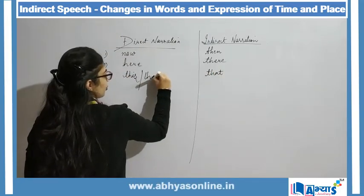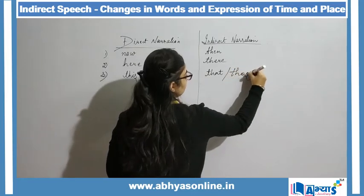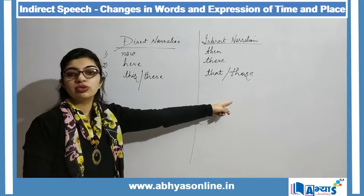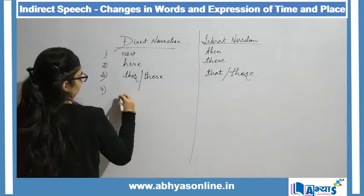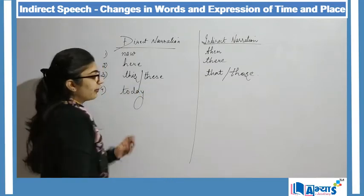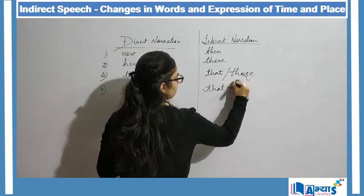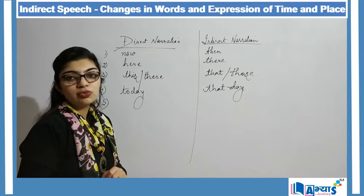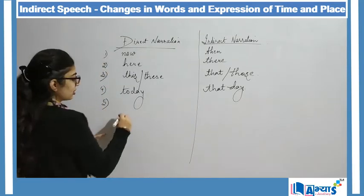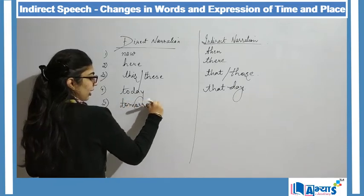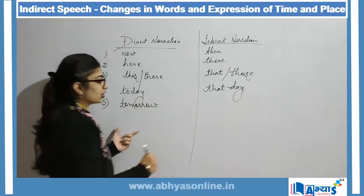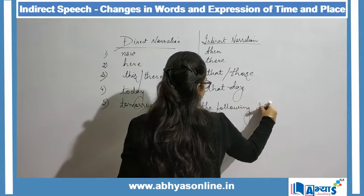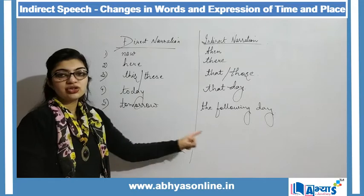Similarly, 'these' changes to 'those'. If I want to convert from direct to indirect sentence, 'these' will change to 'those'. Then if I say 'today', my 'today' changes to 'that day'. And if in my direct sentence I say 'I will go tomorrow', so 'tomorrow' is there in my direct sentence. While converting to an indirect sentence, my 'tomorrow' will change to 'the following day'.